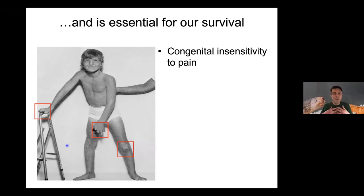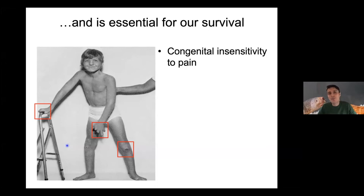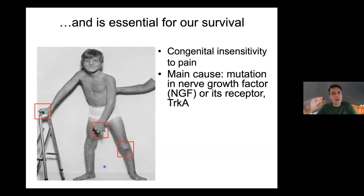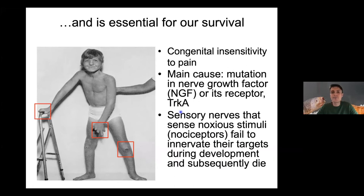To demonstrate the complete lack of pain: a clinical colleague has a patient in his late 20s with this condition whose hands are twisted because as a toddler he would break his own fingers during arguments to make his parents give in — he couldn't feel it was painful. The main cause of this condition is a mutation in the nerve growth factor signalling system — NGF or its receptor TrkA. Without this, sensory nociceptors fail to innervate their targets during development and die off, so anatomically this person does not have the sensory neurons that enable him to feel 'ouch.'